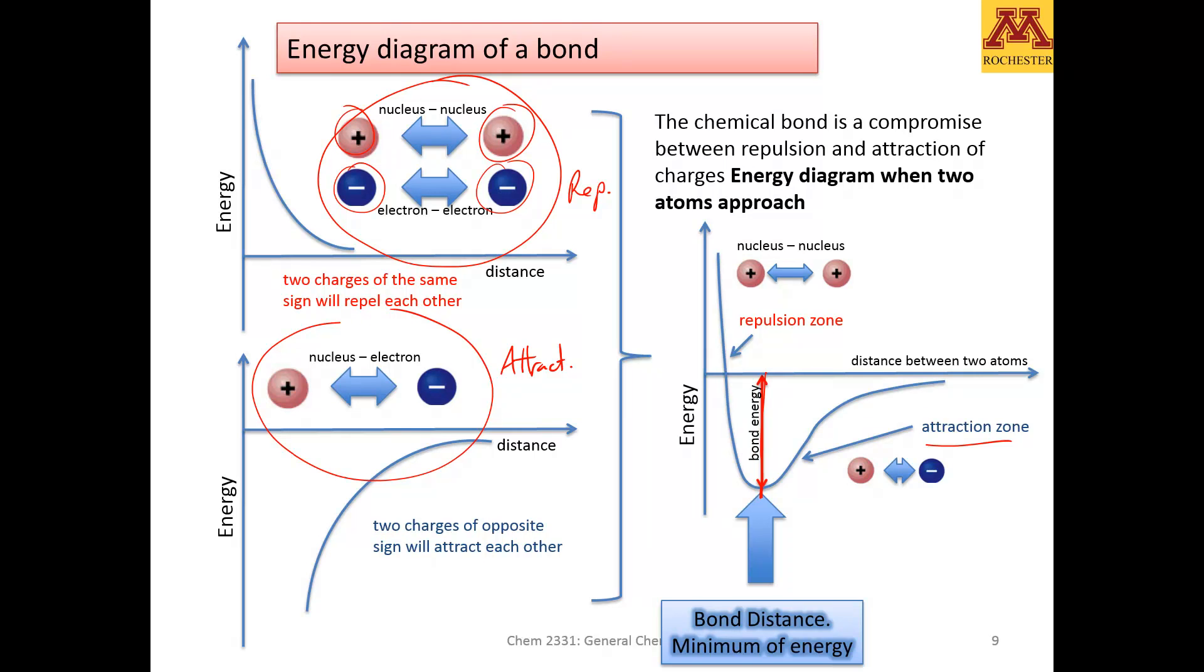And the energy going from the deep of the well until zero energy, that's called the bond energy. So we will be using these kind of graphs because it will help us understand not only strength of the bond, but also the bond distance. This distance here is the distance between the two atoms that makes it optimal to maximize the attraction and minimize the repulsion.